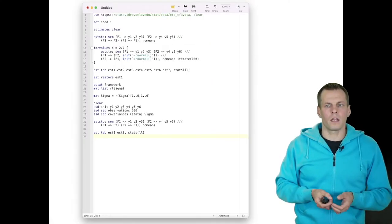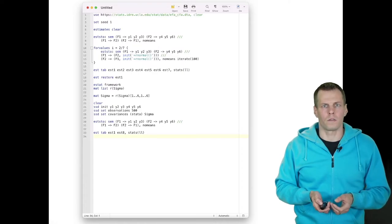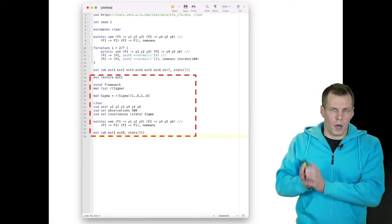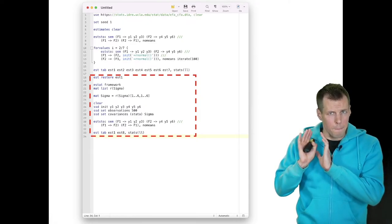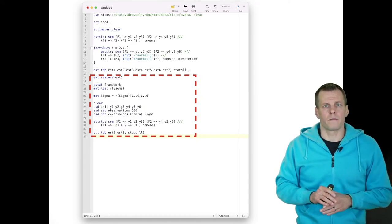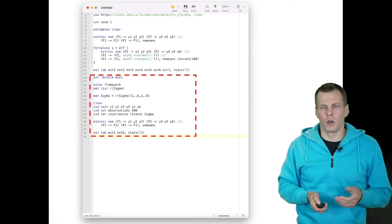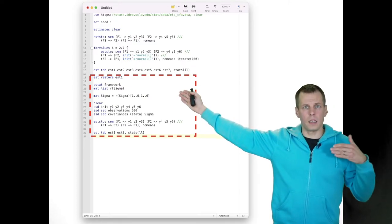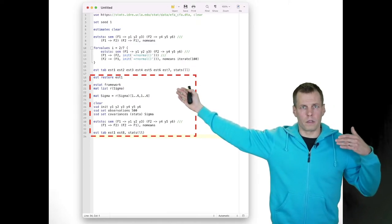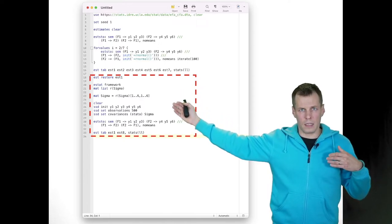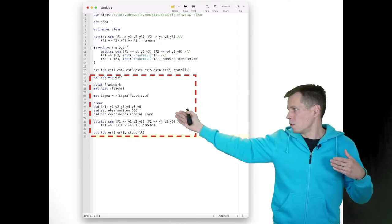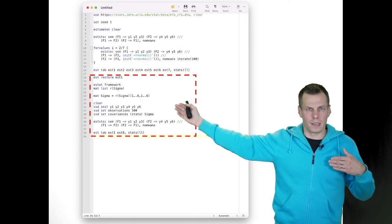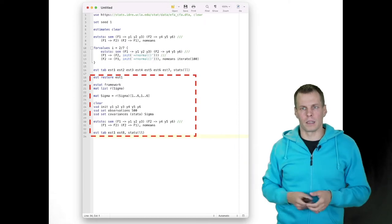Another way that we can show the lack of identification of this model is to estimate the model from the model implied covariances from the estimates. So we do this thing, we take the framework, we take the sigma, the model implied covariance matrix of the indicators. We use that as data using SSD. We have a large sample size, larger than 500 would be better. I just happened to use 500 in the example. And then we re-estimate the model.